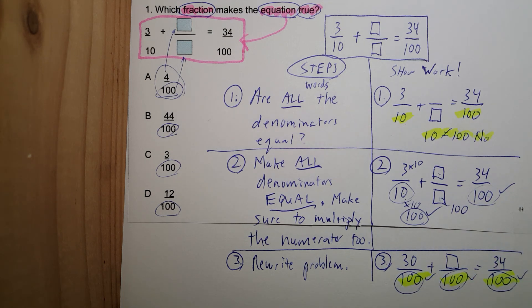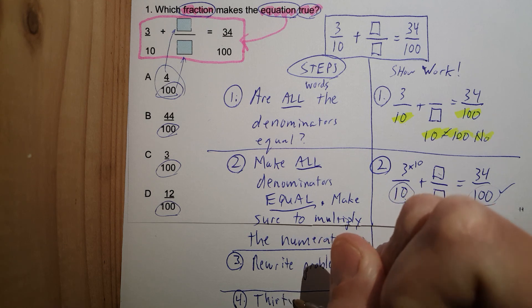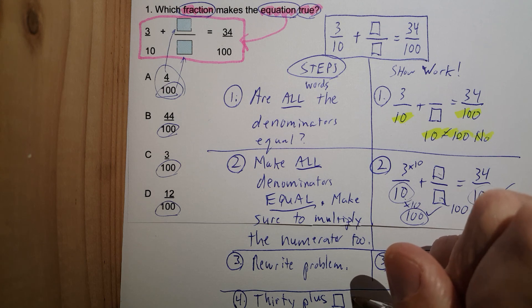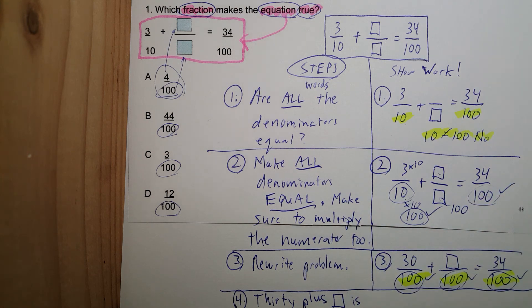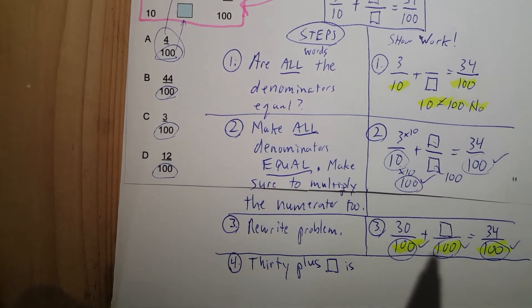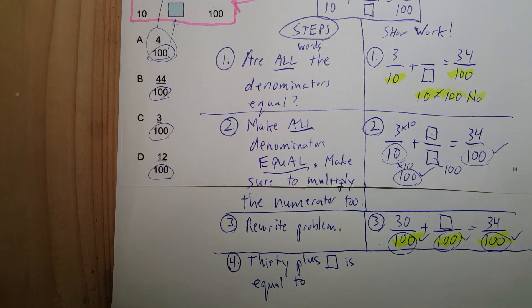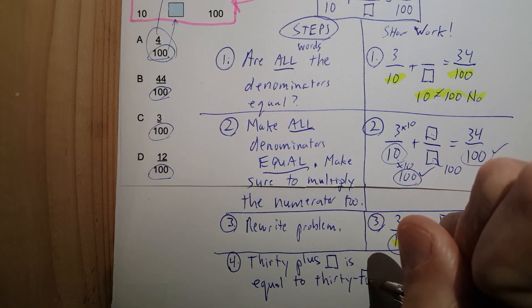Now, when we were practicing this today, most students saw this right away. Okay? Since these are the same, 30 plus what number equals 34? And they could do that in their head. That would be step number 4. Remember, this is all in words. So, watch this. Step 4. 30 plus unknown number. So, let's move it down a little more. Almost there. Equal to thirty four.